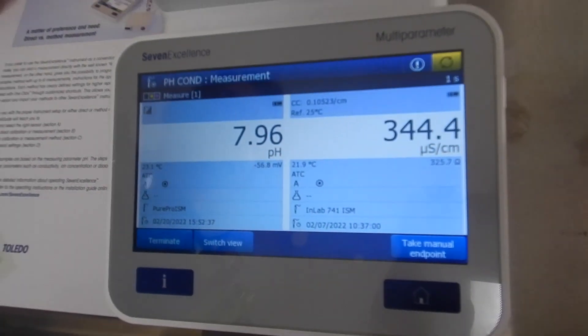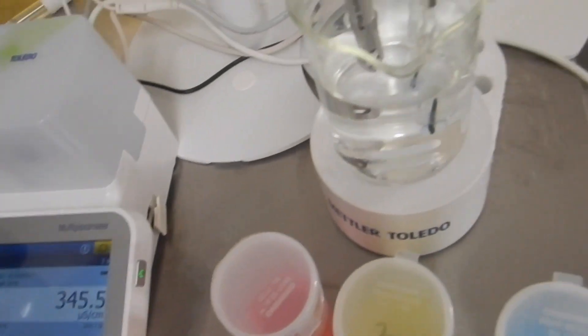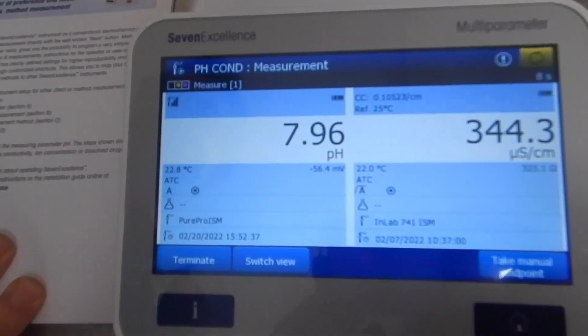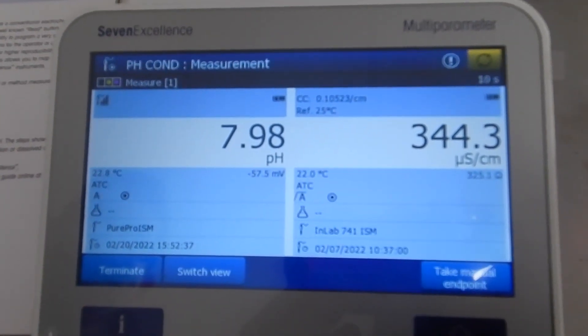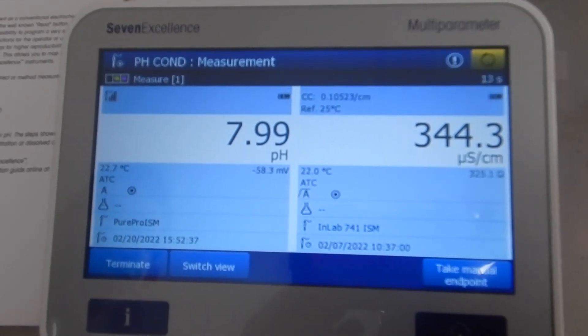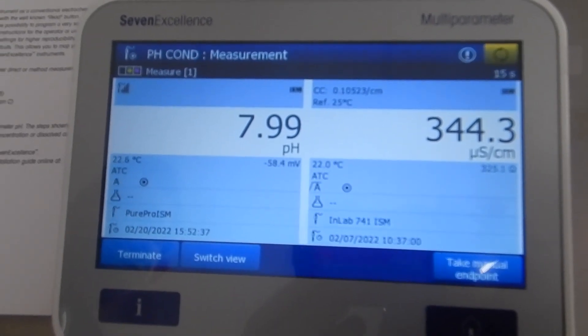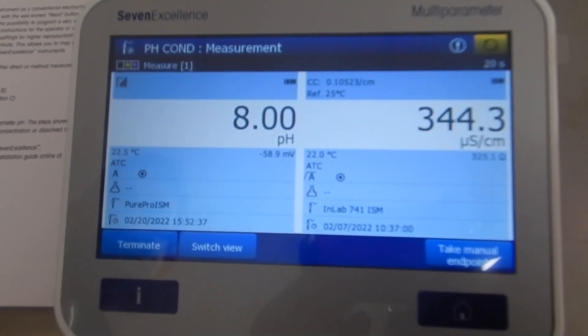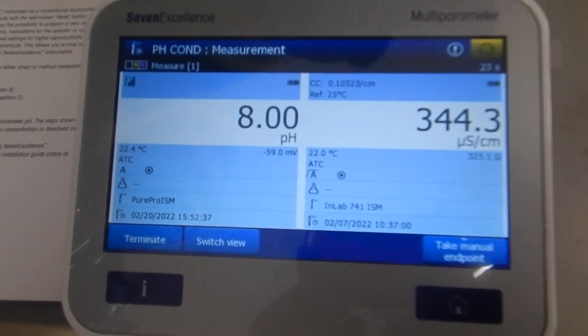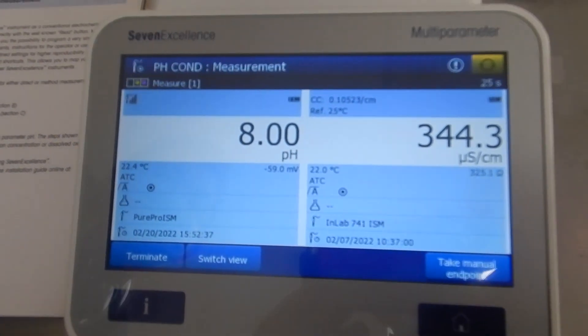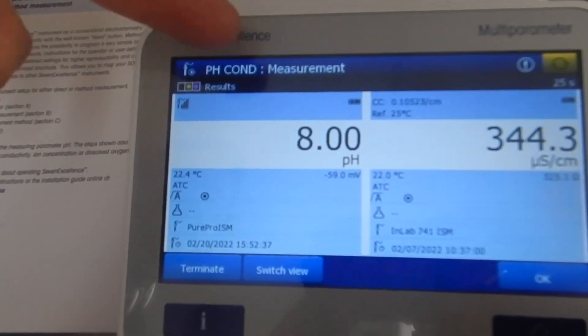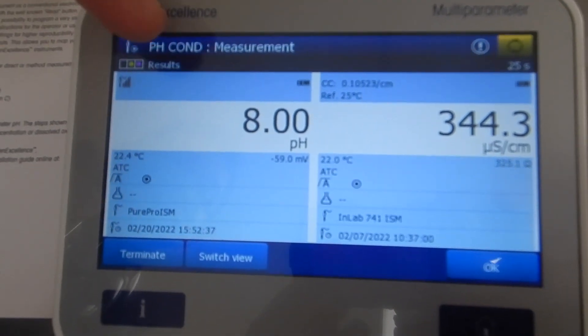Once it stabilizes, the timer in this corner will stop and the stirrer will stop. So this is basically it's locked on to the measurement for pH and conductivity.